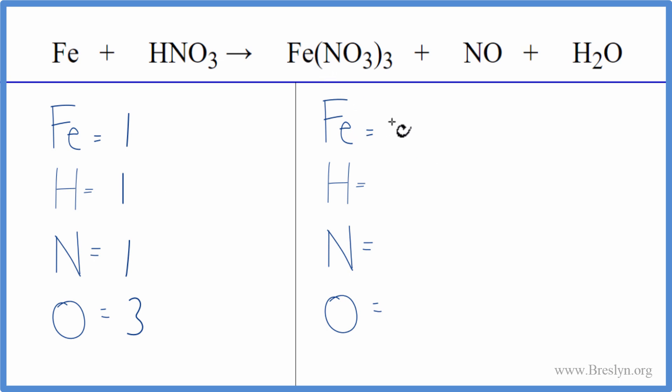On the product side, we have one iron, then two hydrogens. For nitrogens, we have three times one, so three plus the one nitrogen right there, so four nitrogen atoms. And then oxygens, three times three, that's nine, plus one with the NO, plus one in the water. So we have eleven total oxygen atoms.